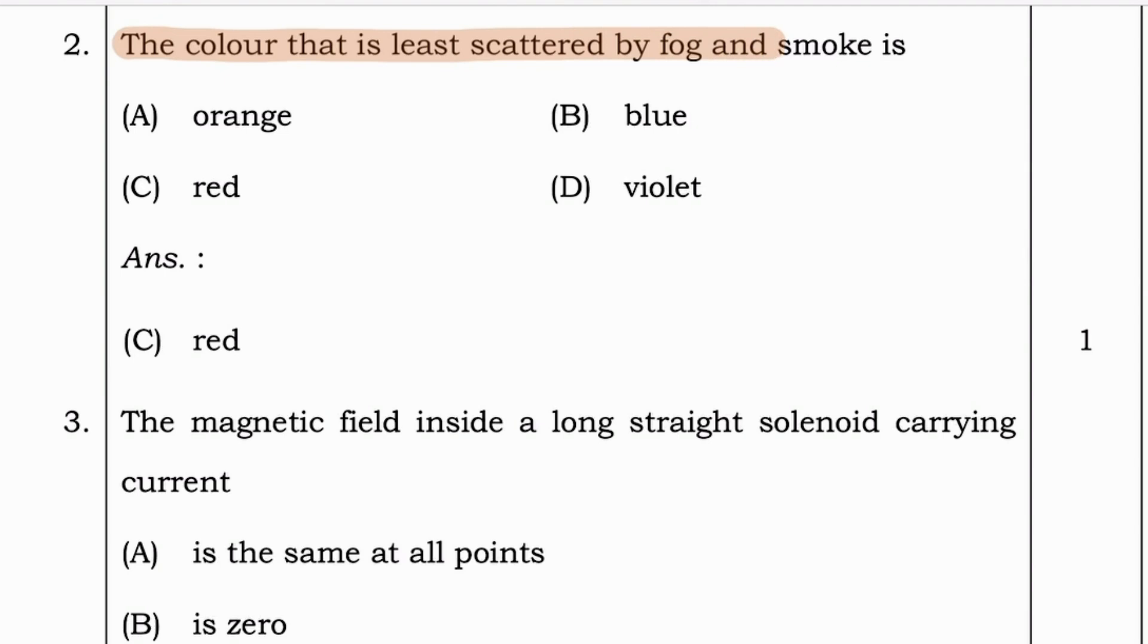Now next question. The color that is least scattered by fog and smoke is orange, blue, red, or violet. And answer is option C, red.